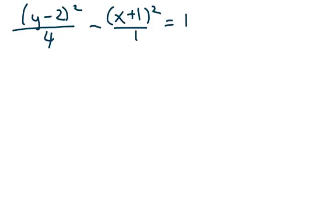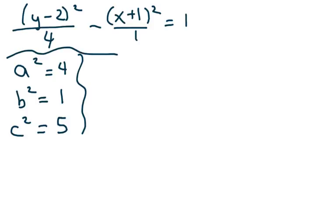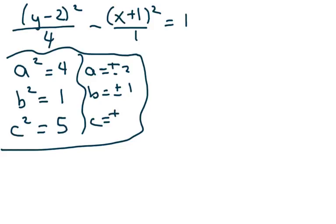And this equals 1. All right. Now, let's fill out all the information we need. We know when we have this, we have a, so let me rewrite this. We have y minus 2 squared over 4 minus x plus 1 squared over 1 equals 1. So I'm going to do my a squared equals 4. B squared equals 1. And then you add these two to get your c squared, which is 5. Therefore, a is plus or minus 2. B equals plus or minus 1. And c equals plus or minus square root of 5.